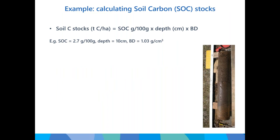Here's a quick example calculation. If you have 2.7 percent carbon in the top 10 centimetres of your soil and your bulk density is 1.03, then your soil carbon stocks equal the concentration multiplied by the depth multiplied by the bulk density — giving 27.81 tonnes of carbon per hectare. For stocks to 30 centimetres, do the same calculation for different layers and add them up.